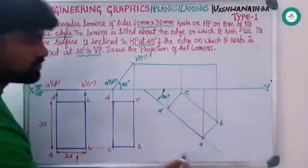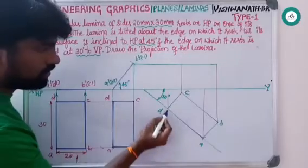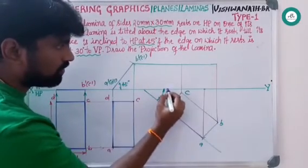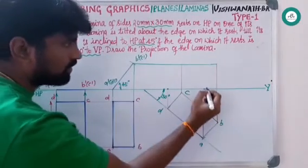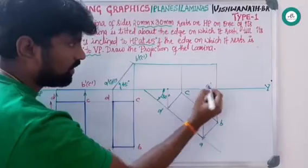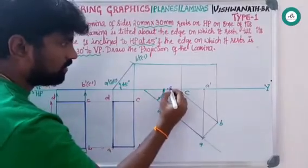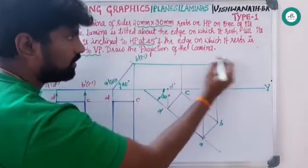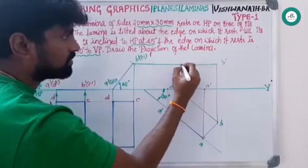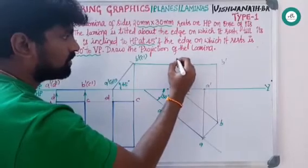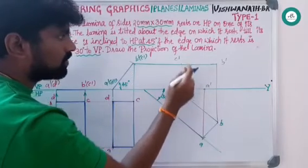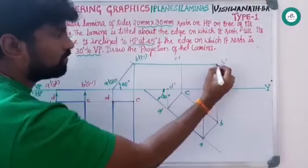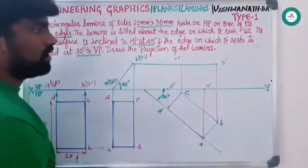After projecting, we know that the resting edge always falls on the XY line — that is A dash and D dash. Meet the other points: this is B dash and this is C dash. Meet all these points to get the final shape. After joining all these points, the figure is complete.